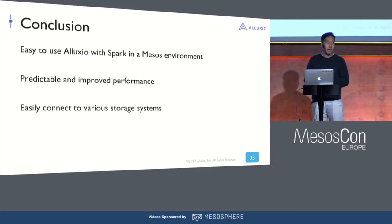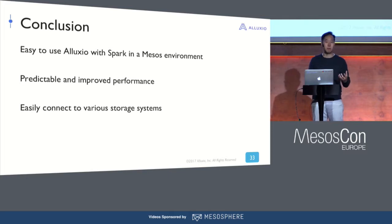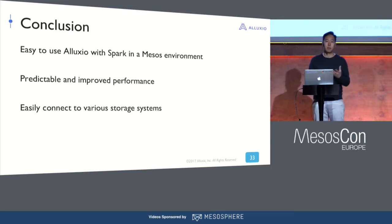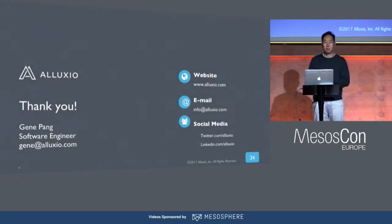In conclusion, I showed how easy it is to use Alluxio and Spark in the Mesos environment. I also described the overview of Alluxio and how it can benefit many different scenarios. Alluxio can provide significant IO performance benefits because it can store data closer to the application and in memory. I've also shown that Alluxio can connect different storage systems easily into a single unified namespace. That is the end of my talk. Thank you very much.